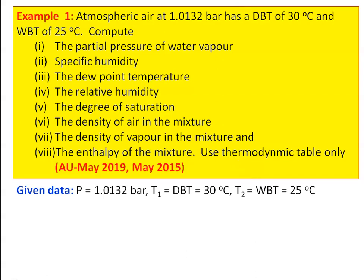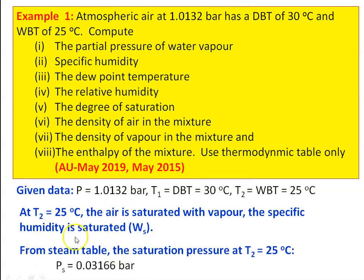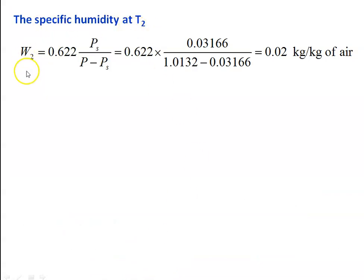Given data: pressure P = 1.0132 bar, dry bulb temperature T1 = 30°C, wet bulb temperature T2 = 25°C. At T2 = 25°C, the air is saturated with vapor. From the steam table at 25°C, saturation pressure Ps = 0.03166 bar. The specific humidity at T2: W2 = 0.622 × Ps / (P − Ps) = 0.622 × 0.03166 / (1.0132 − 0.03166) = 0.02 kg/kg of air. This is the saturated specific humidity at wet bulb temperature T2.